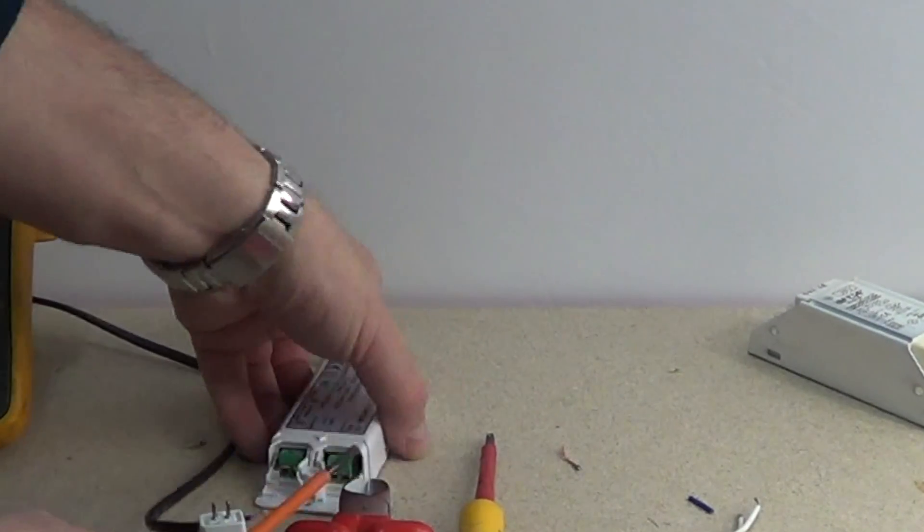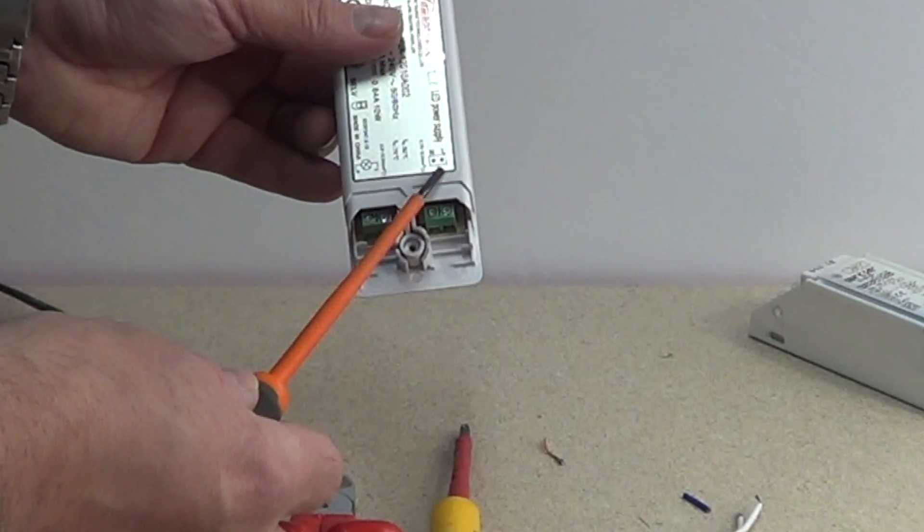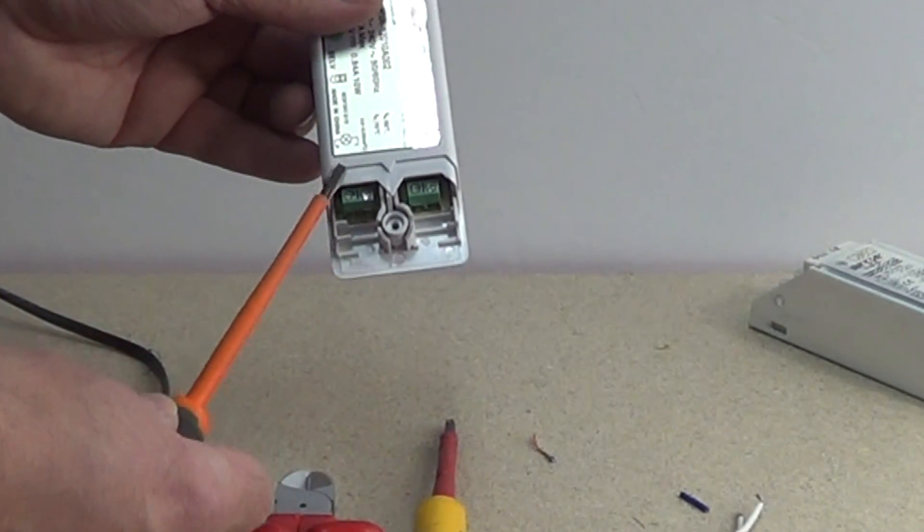And the other side. There you go. The cable that is the side of the bulb and there is the live and the neutral. The brown is live and the blue is neutral.